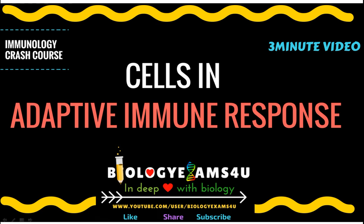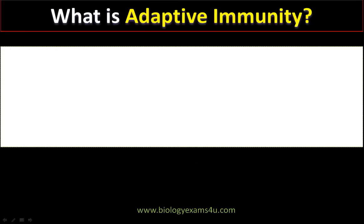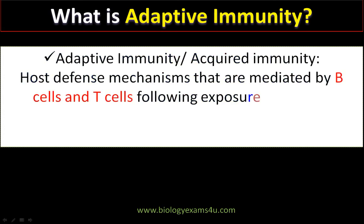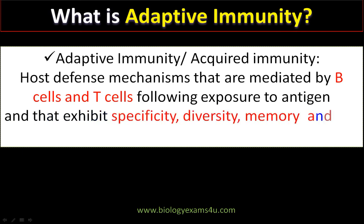Hi friends, welcome to biologyexamsforyou.com. In the last video we discussed about antigen presenting cells. Here is a short summary of cells involved in adaptive immune response. Adaptive immunity, or acquired immunity, refers to the host defense mechanisms that are mediated by B cells and T cells following exposure to antigen. The characteristic features are high specificity, immense diversity, immunologic memory, and the ability to recognize self and non-self cells.